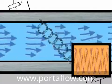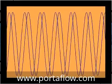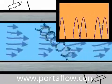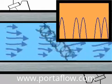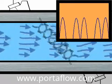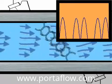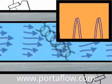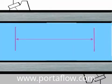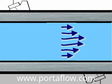To measure the difference in arrival time, we simply look at the phase shift between the two signals. This phase shift difference is directly proportional to the speed of the liquid in the pipe. This relationship is a function of how far apart the transducers are and the flow profile of the liquid in the pipe.